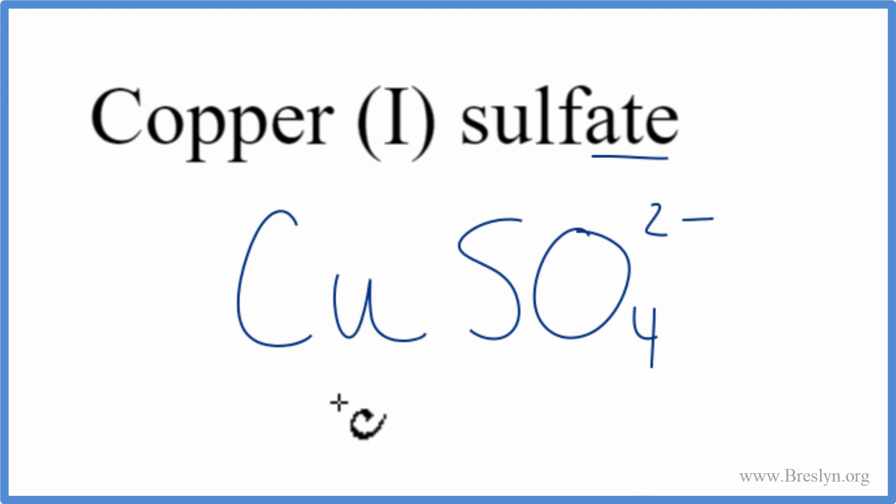So we have copper, that's the metal, and then we have a group of nonmetals, the sulfate group. A metal and nonmetals, that's ionic. We need to think about the charges when we write the formula.